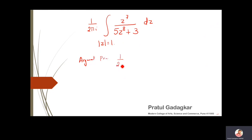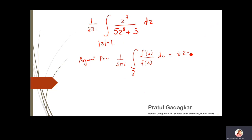The argument principle says that whenever I have one over two pi i, the integral of f'(z) upon f(z) dz over a curve gamma, this is equal to the number of zeros minus the number of poles inside gamma.